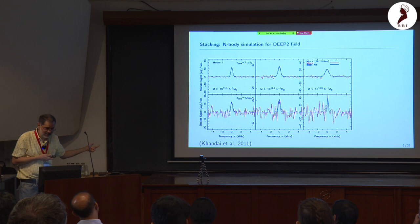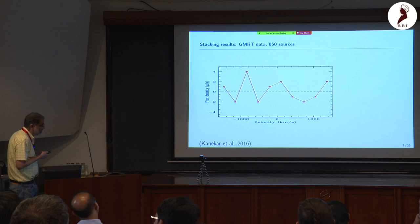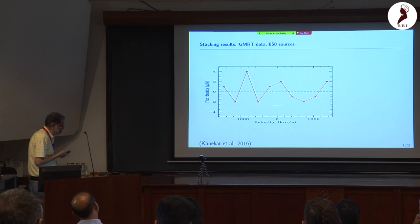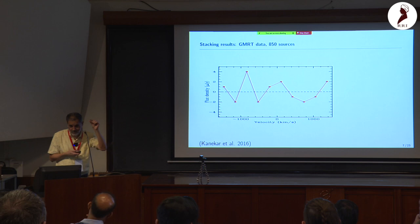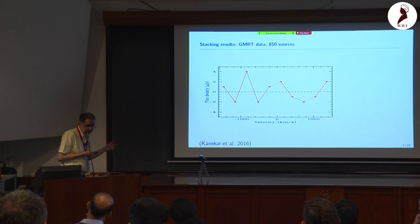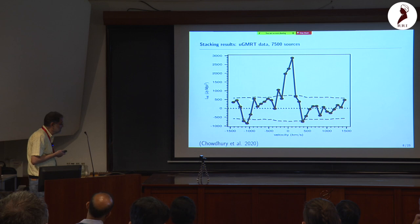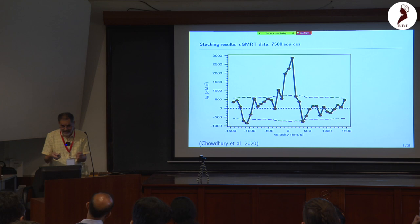Here is an actual experiment: GMRT data from 850 stacked sources reached a noise level of around 2.5 microJanskys. You can compute quickly: 250 microJanskys per channel, averaged over 9 channels to match the halo width of around 270 km/s, stacked over 850 sources gives roughly √850 improvement, reaching close to 2.5 microJanskys. This gives confidence that with more sources or deeper observations, detection is feasible.